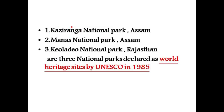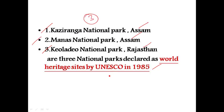Kaziranga National Park, which is in Assam; Manas National Park, which is also in Assam; and Keoladeo National Park, which is in Rajasthan — these are the three national parks declared as World Heritage Sites by UNESCO in the year 1985.